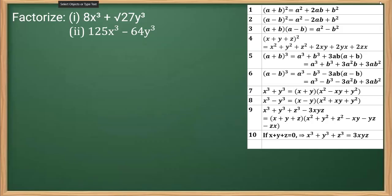This is one question taken from chapter polynomial based on factorization. So the question says factorize, in the first part we have 8x³ plus √27y³. As you must be knowing that factorization means writing in the form of product, so we can see that we also have in the question in the form of a³ plus b³.